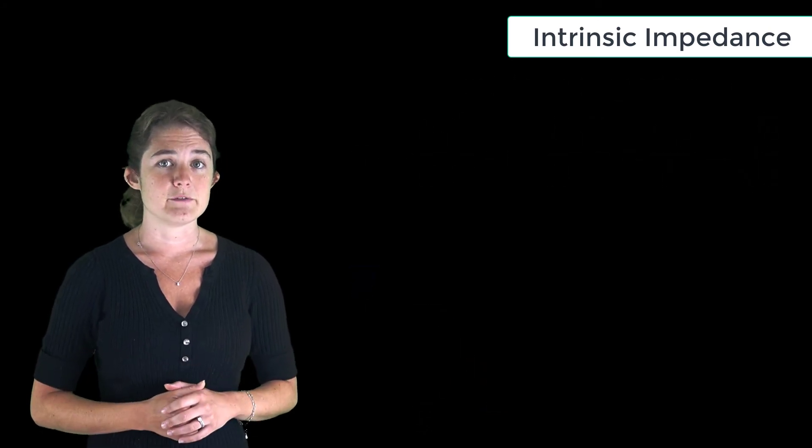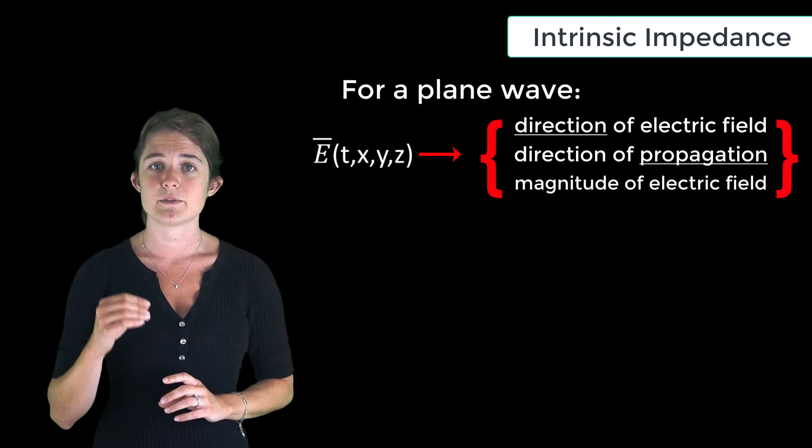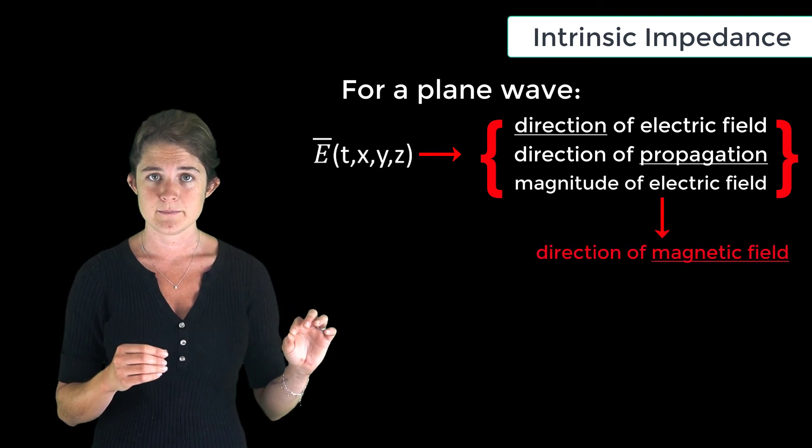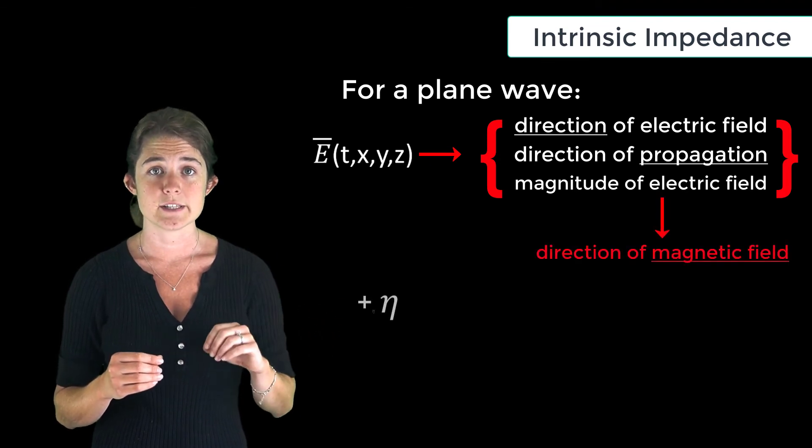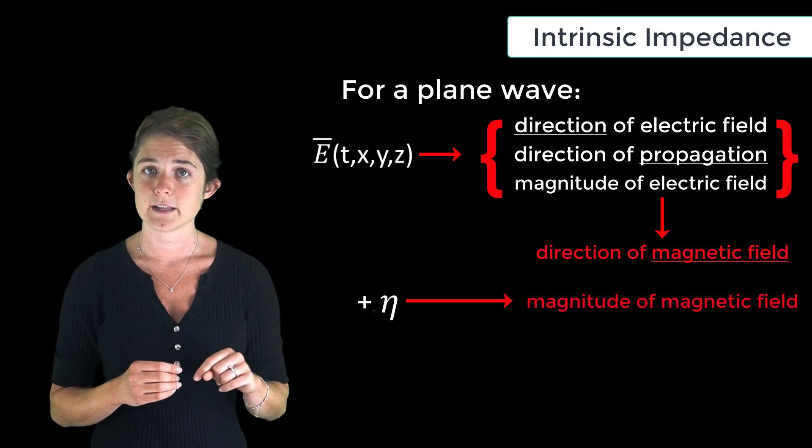Let's take a moment to think about what we've just done. We said that for a plane wave, if you know the equation for the electric field, you can find the direction of the magnetic field. Now, using the intrinsic impedance, we can find the magnitude of the magnetic field from the magnitude of the electric field.